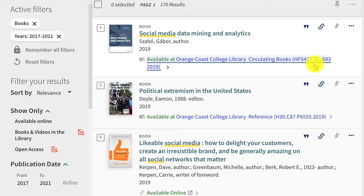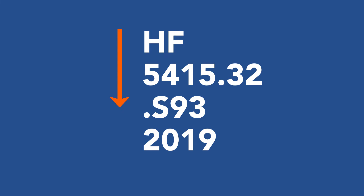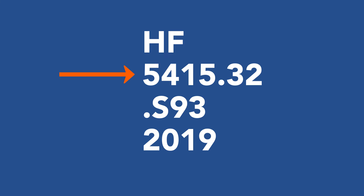Upstairs you'll find the H section and then look for HF on the end of the shelf. The number is located vertically on the spine of the book. First you would look for HF, then move down to the next row and look for 5415, and from there move to the next row for S93. Typically by about here you'll be able to find the book. One very cool thing about these numbers is that books near this book will be on a similar topic, so you may find other books on the shelf that interest you as well.